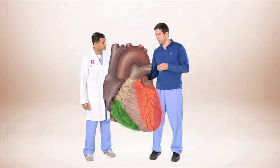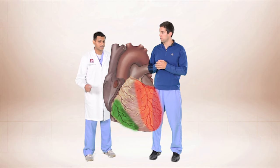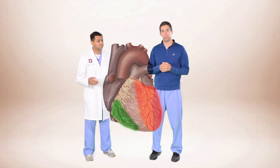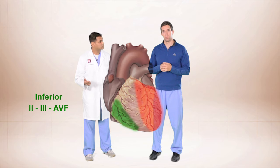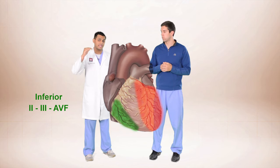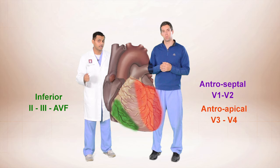And likewise, if you had an inferior MI, you would expect changes anteriorly? That's correct. So if you're having ST elevations in leads 2, 3, and AVF, you're actually going to be looking anteriorly for ST depressions in leads V1 all the way up to possibly V4.